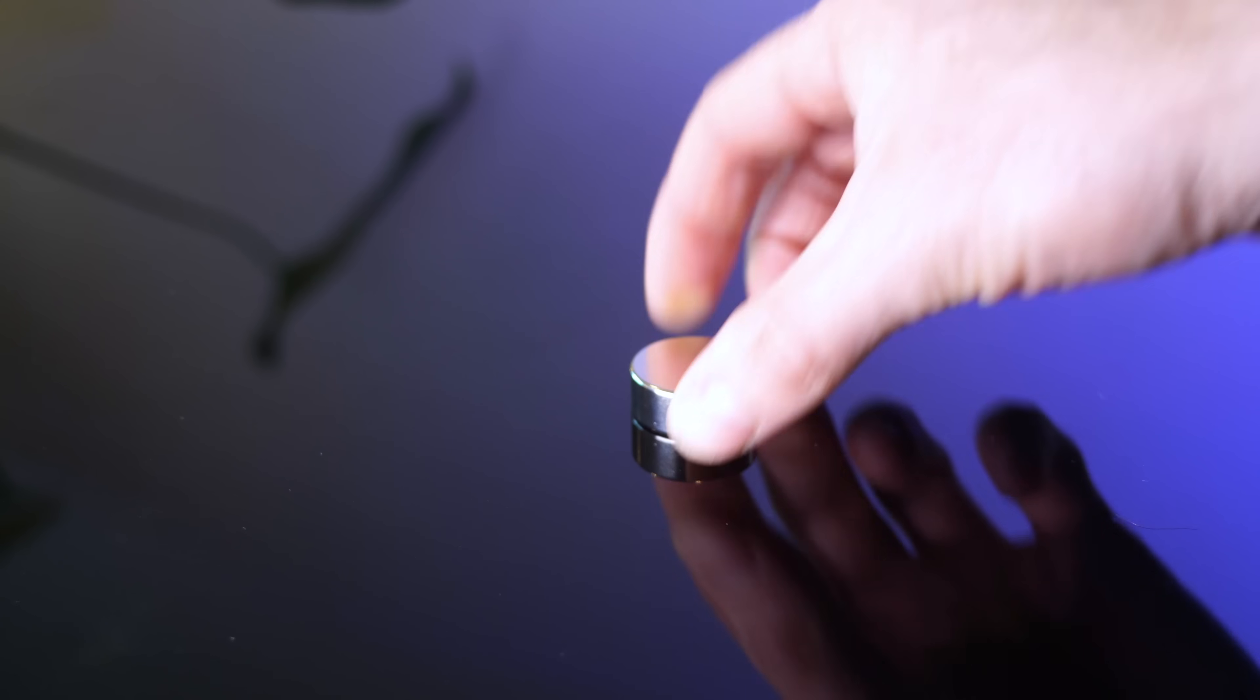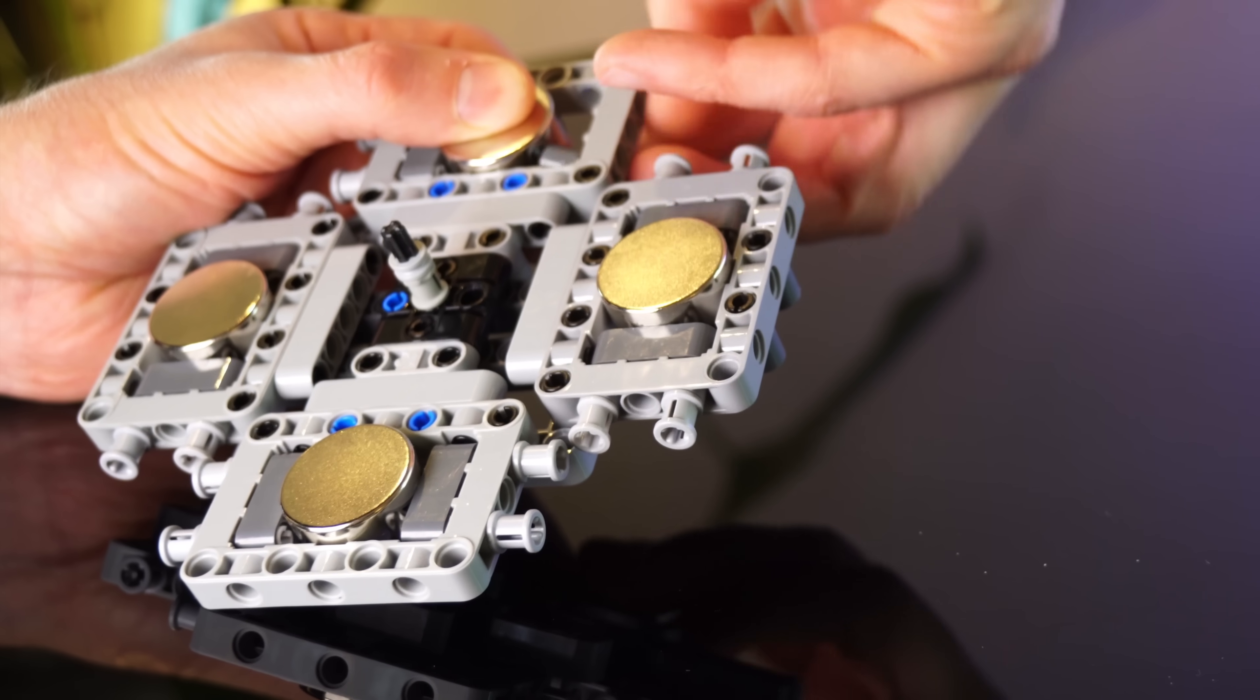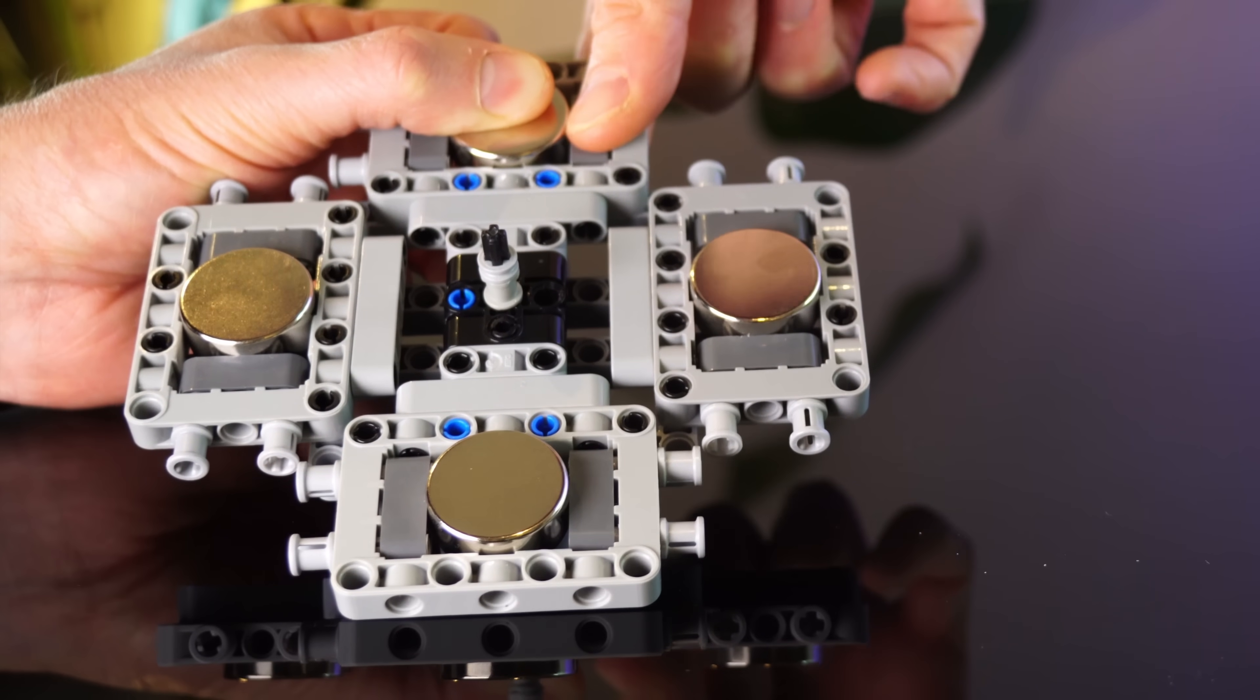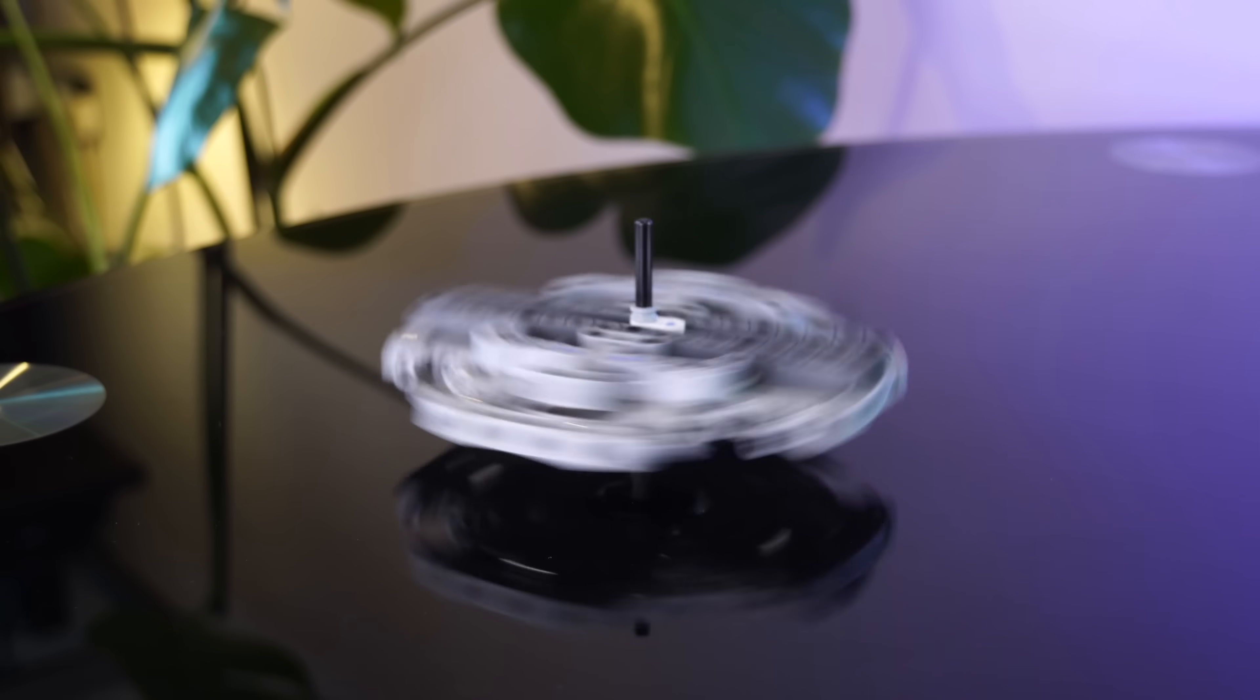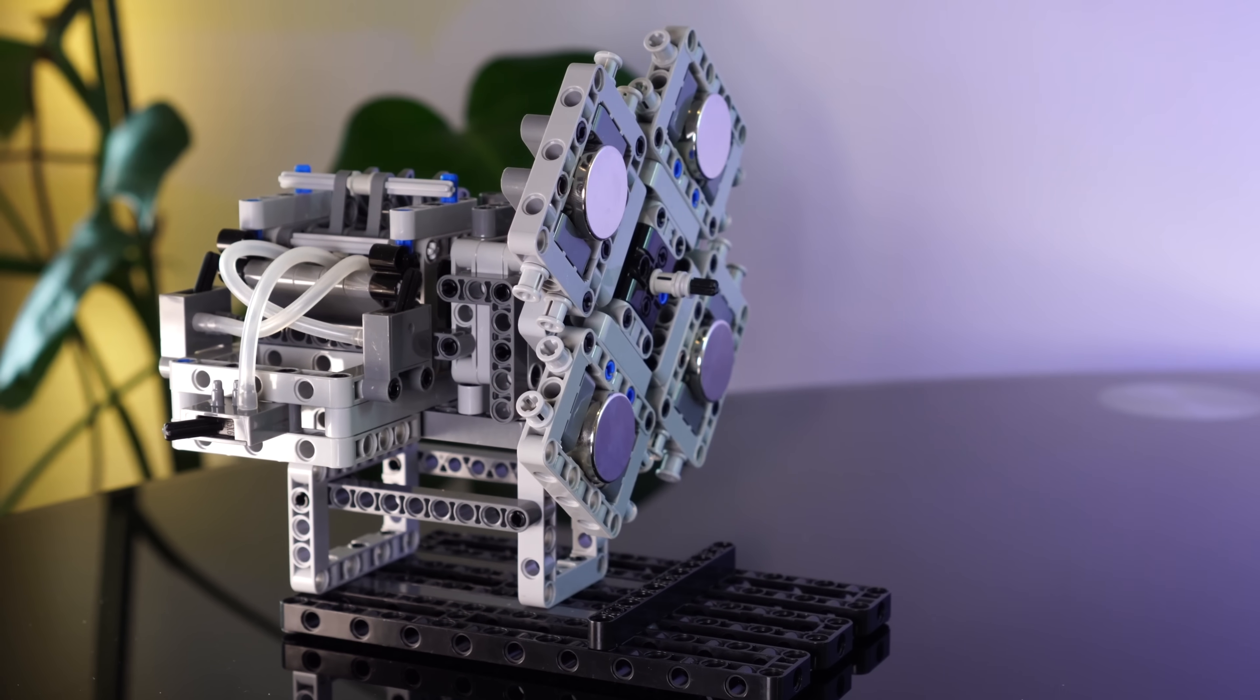First, we'll need some nice big magnets. Fortunately, if I squish hard enough, these fit tightly into this LEGO frame. And when I say tight, I mean these are tight. They don't even budge when I throw them around. However, it is pretty damn heavy. So let me pop these onto the rotor and see if it can actually move it.